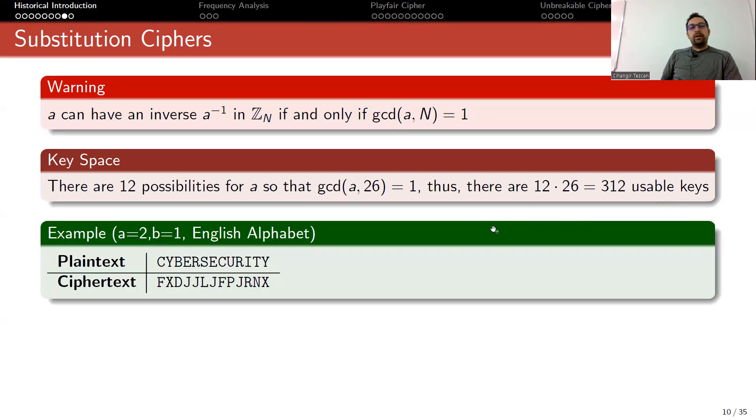Here's an example of what happens if I choose a value which doesn't have an inverse. As I mentioned, a equals 2 and greatest common divisor of 2 and 26 is not 1 but 2, so it doesn't have an inverse. If we look, we'll see that e is mapped to j, but r is also mapped to j. When you want to decrypt, you wouldn't know which letter j goes back to. This is why you need a number that has an inverse.